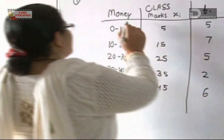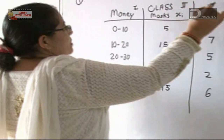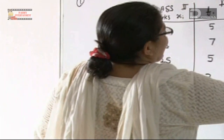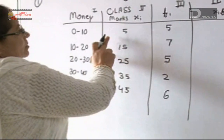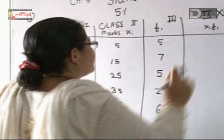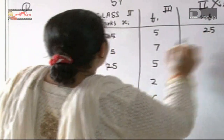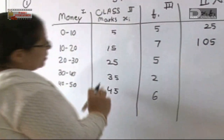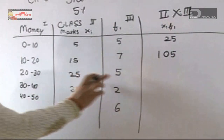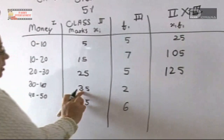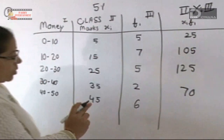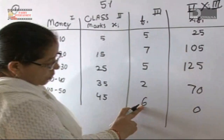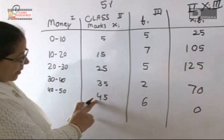We add columns: column 1 is the class mark (x), column 2 is the frequency (f), and column 3 is fx — the product of the class mark and frequency. Multiplying: 5×5=25, 15×7=105, 25×5=125, 35×2=70, and 45×6=270.